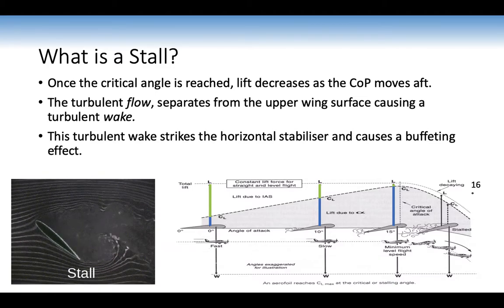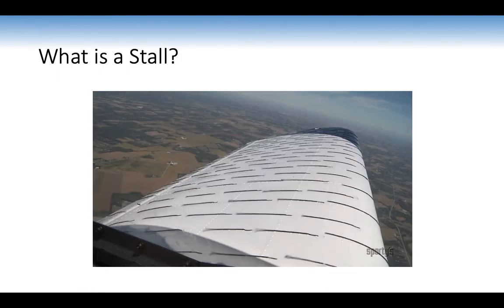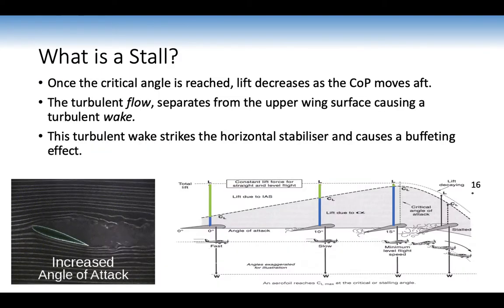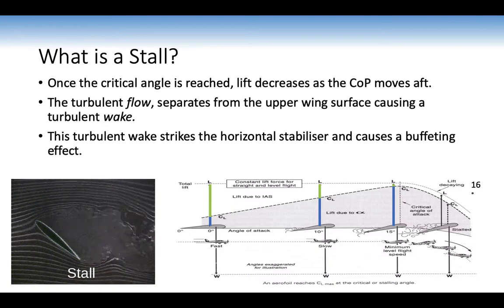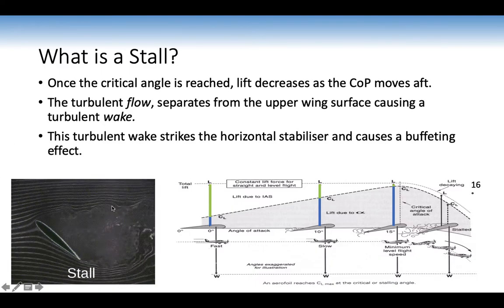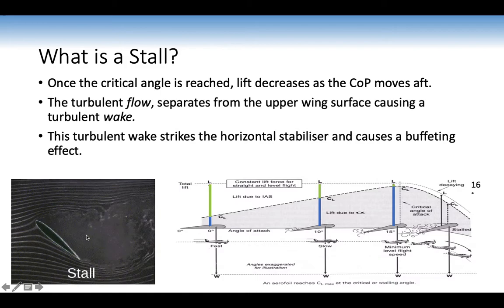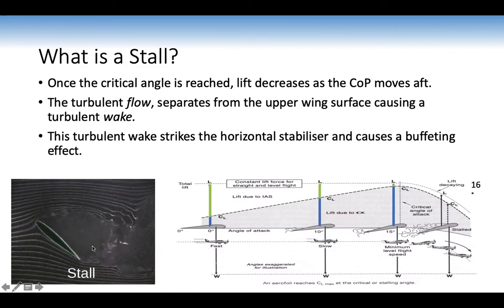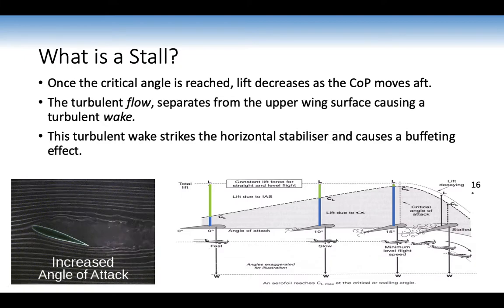Once the critical angle is reached, lift decreases as the centre of pressure moves aft. The airflow becomes totally separated — the turbulent flow separates from the upper wing surface, causing a turbulent wake. This turbulent wake strikes the horizontal stabiliser and causes a buffeting effect. All this separated airflow comes off the wing, strikes the stabiliser, and you'll notice that buffeting effect at the stall.